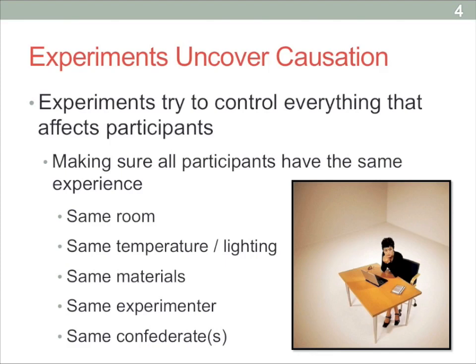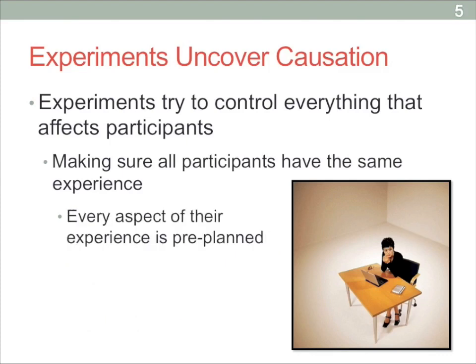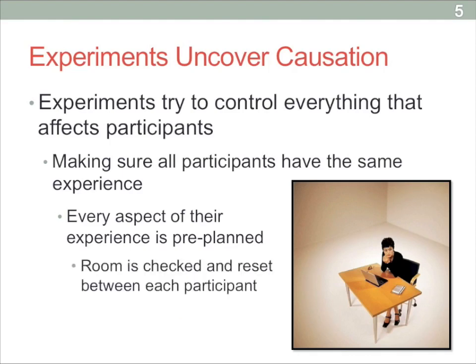You want to keep everything the same except for the one thing you're varying between conditions. That way, if there are any group differences at the very end of the experiment, you know it must be that one thing you're manipulating and not any other extraneous factors causing differences between groups. With every aspect being pre-planned, you have to put in a lot of effort to make sure that you have everything scheduled, planned out, arranged, and organized before you even set up the experiment. You also want to check the room each time between participants — even if a participant puts trash on the floor, you have to clean it up, because studies show even a little litter on the ground can affect behavior.